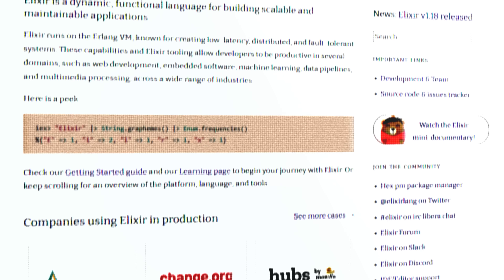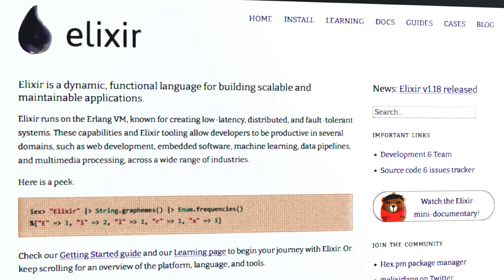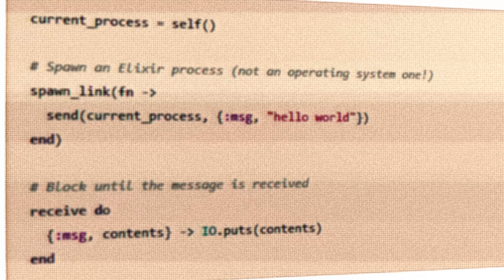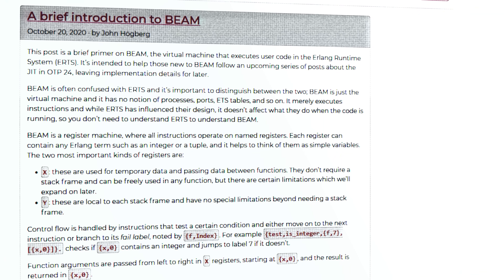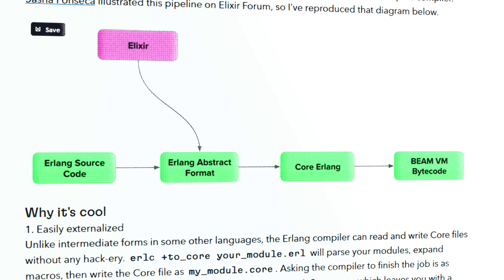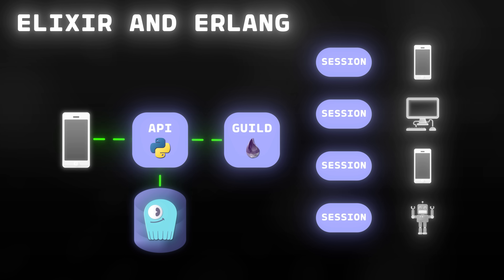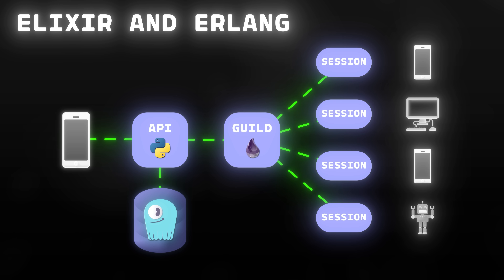How Discord handled their servers was they used something called Elixir, which is a programming language that runs on top of the Erlang virtual machine, known for being good for fault-tolerant and distributed applications. Each Discord server has one Elixir process sitting in between the clients and the Discord API. Elixir will fan out updates to every single client as they happen. And all of this seems solid, but this is where things started to get a little dicey.